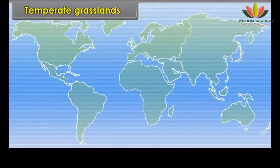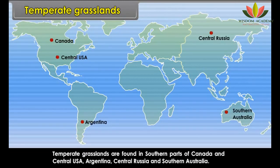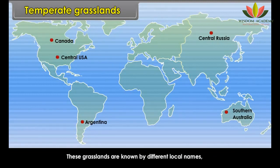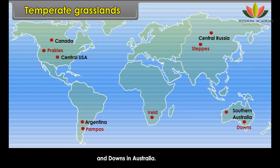Temperate grasslands are found in southern parts of Canada and Central USA, Argentina, Central Russia and Southern Australia. These grasslands are known by different local names: prairies in North America, pampas in Argentina, veld in South Africa, steppes in Russia and downs in Australia.